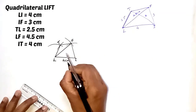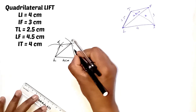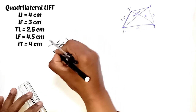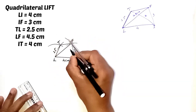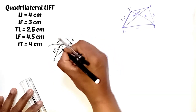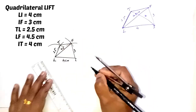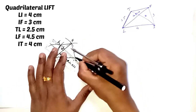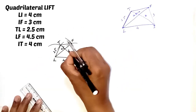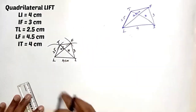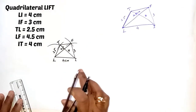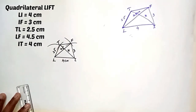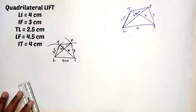LI is 4 cm, IF is 3 cm, LT is 2.5 cm, LF is 4.5 cm, and IT is 4 cm. This is the required quadrilateral LIFT. Hope you all understood.